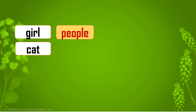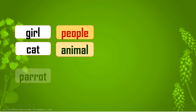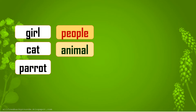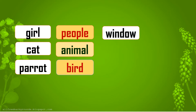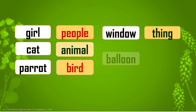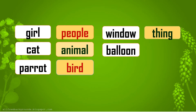The next thing was cat. Cat is an animal, you all know that. Then parrot — parrot is not a person, it is not an animal. Then what is it? It is a bird. The next thing was a window. Window is a thing. Then balloon — balloon is also a thing. In a balloon there is air, and we cannot see air with our eyes. We can see the balloon, but we cannot see the air.